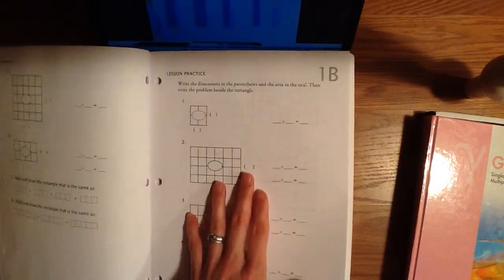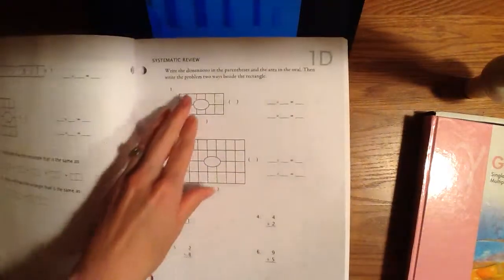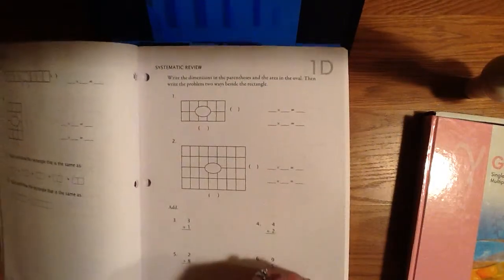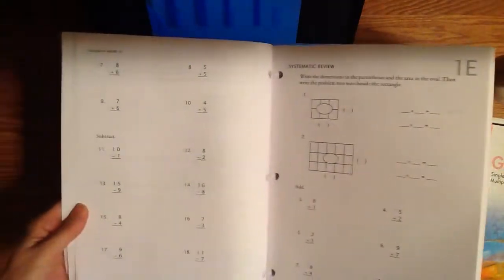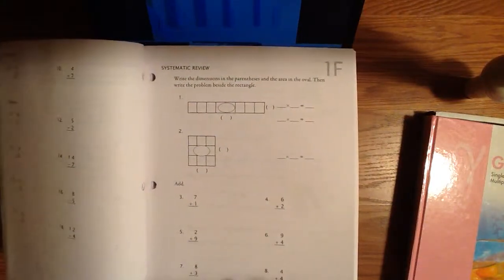And that's where you, as the teacher, will have to make that determination. The last three pages are a systematic review. And this is where not only will they be looking at what they did for that day, but they'll also be going back into operations and skills that they have learned in the past. Now, it is encouraged to do all three pages or all three of the systematic reviews. So depending on the time that you have and how quickly your child is working through the pages, it is highly recommended that you do all the systematic review for that day.